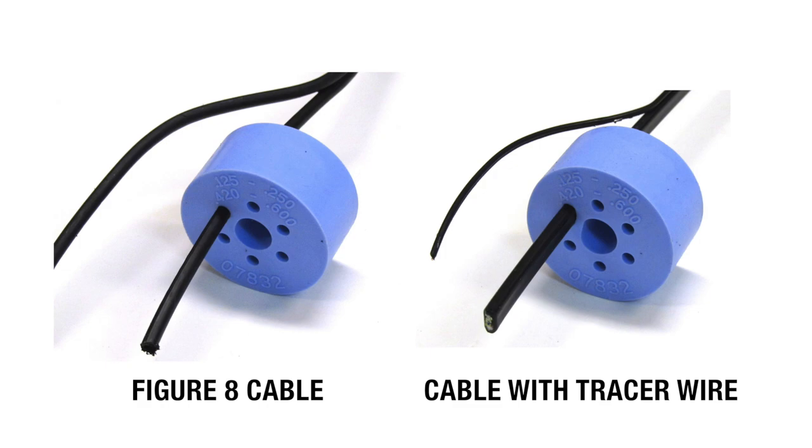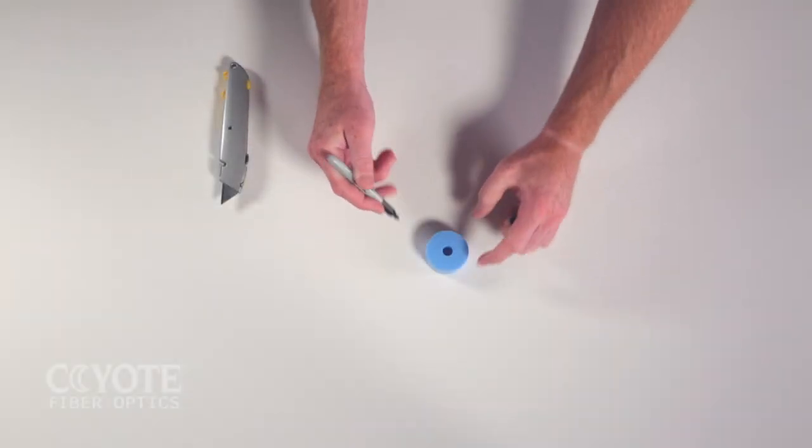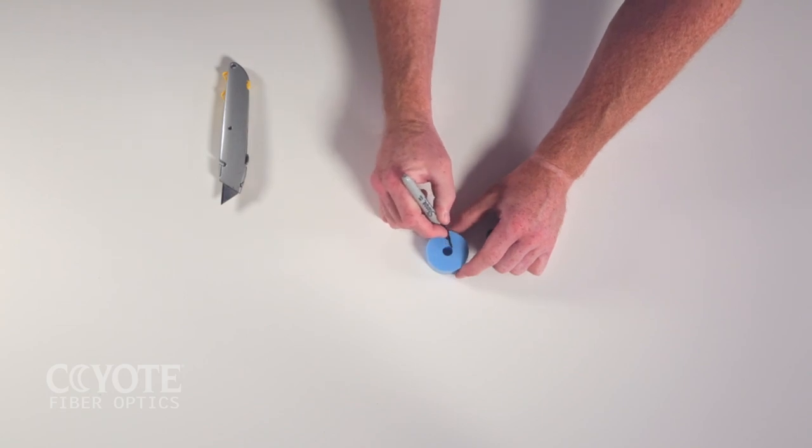If slitting the grommet is required, lay the grommet on a stable, flat surface and mark your cutting line with a permanent marker.